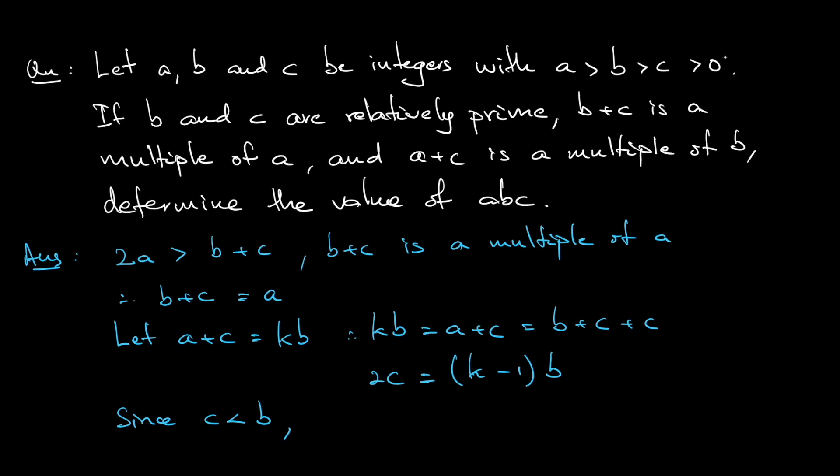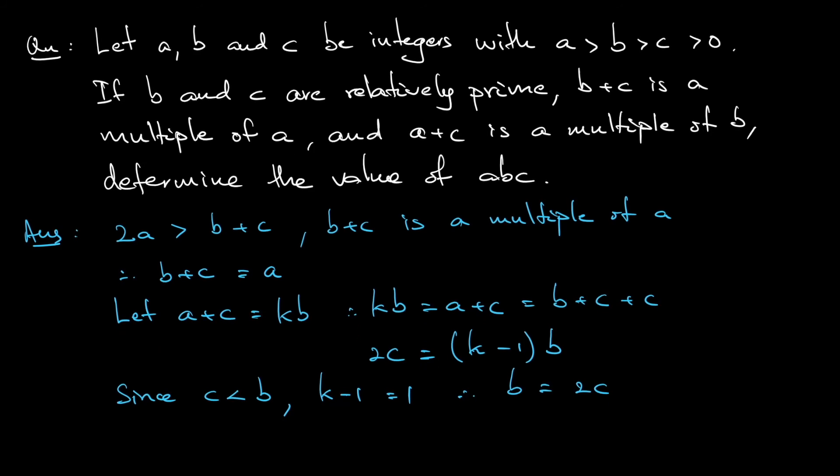That means that your k, b and c is relatively prime, so that means that the k minus 1 need to be 1. And that means that my b alone is equal to 2c. And like I say, because b and c are relatively prime, the only way that this is possible is that c is equal to 1.